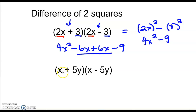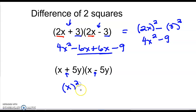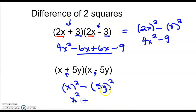Look at the next one — both have an x, both have a 5y, different signs. That means it's a difference of two squares. The shortcut: first term squared minus second term squared. So x squared minus 25y squared.